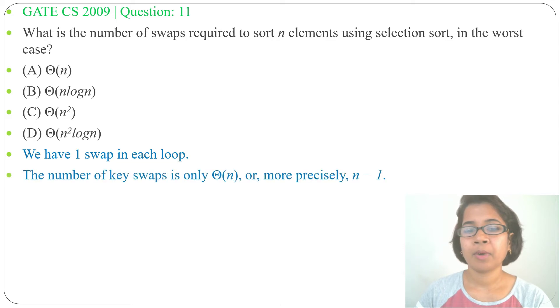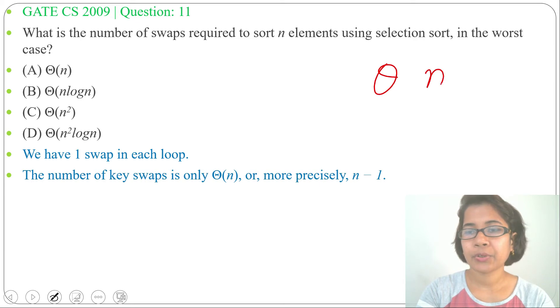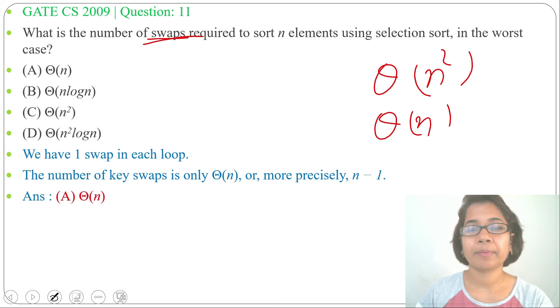Or you can say theta of n swaps. Running time is theta of n square, while number of swaps is theta of n. And in this question, it is asking about swaps, not running time. So here the answer will be option A, theta of n. It is asking number of swaps. Number of swaps is theta of n, while time complexity is theta of n square.